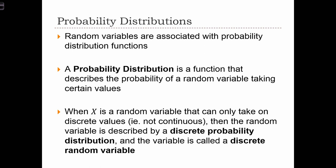When x is a random variable that can only take on discrete values, i.e., not continuous values, then the random variable is described by a discrete probability distribution, and the variable is called a discrete random variable.